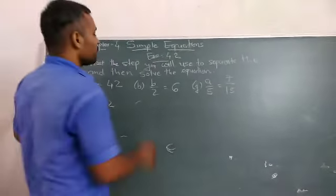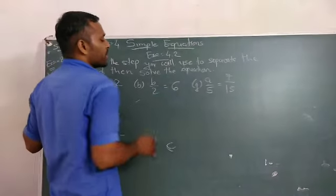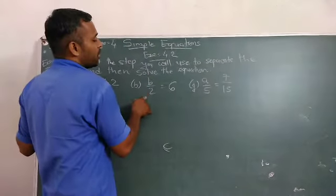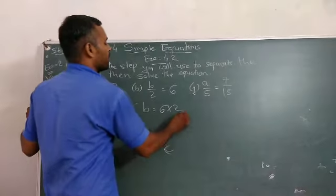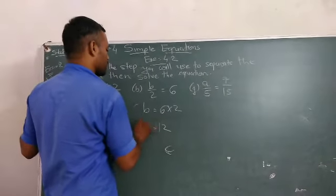Okay, next. v upon 2 is equal to 6. 2 is in the division of v. Now, division is converted into multiplication. Now, v is equal to 12.